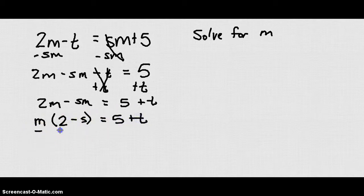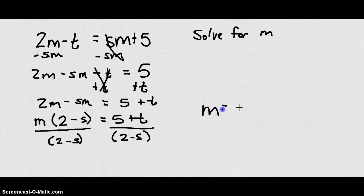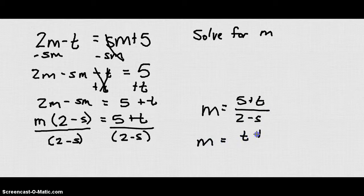Now we can divide both sides by this 2 minus s quantity. And we're going to end up with m equals 5 plus t over 2 minus s.